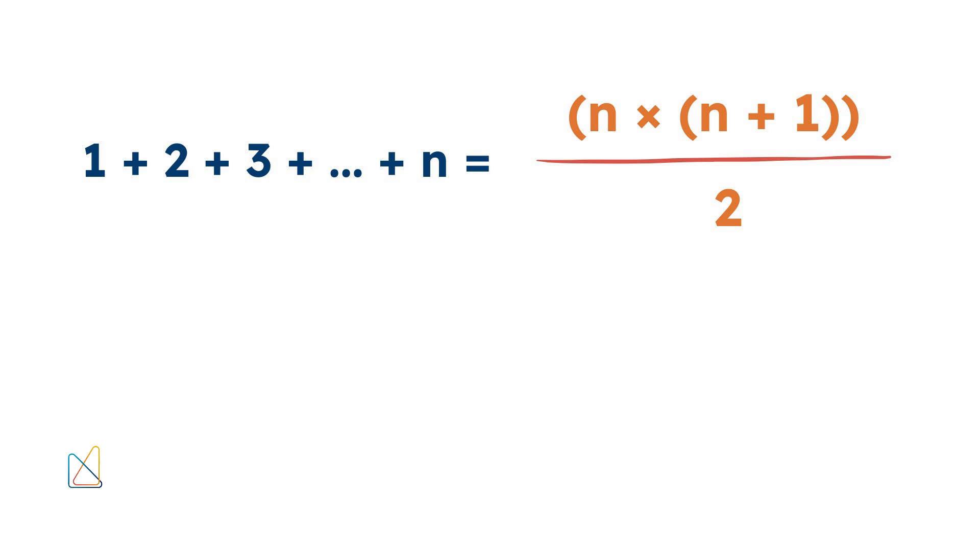For example, if you want to add the numbers from 1 to n, you can use this simple formula. Sum of 1 to n is equal to n times n plus 1 divided by 2.